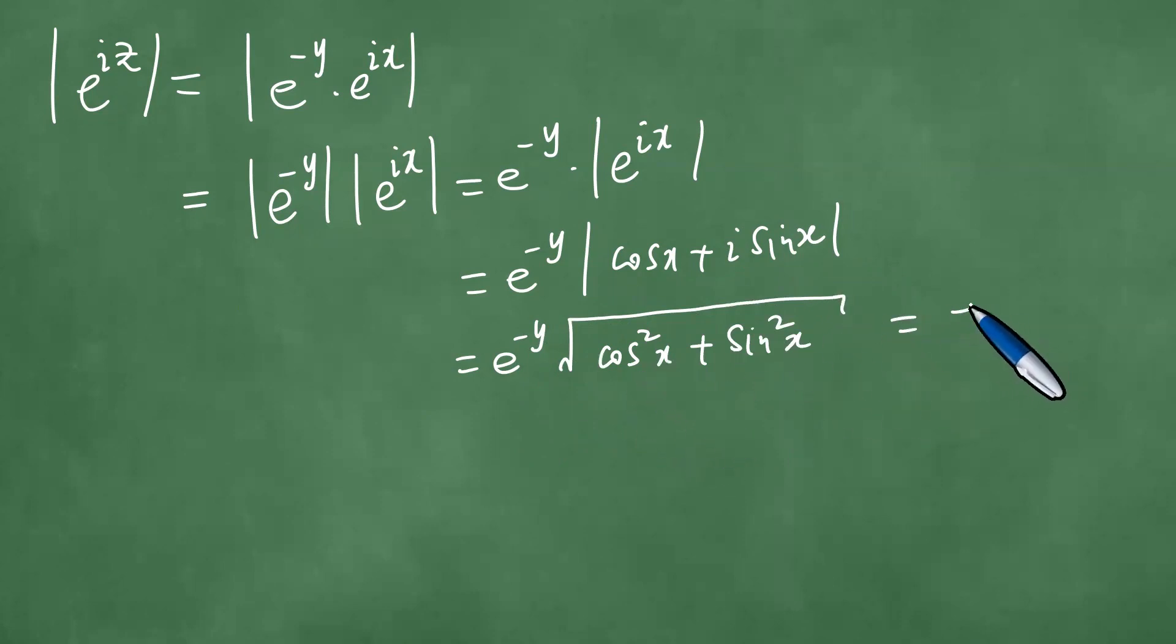e to the minus y into the square root of cosine squared x plus sine squared x. Right, which is exactly e to the minus y times one.